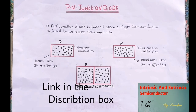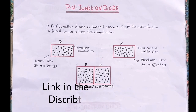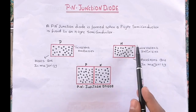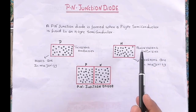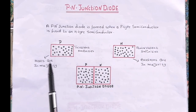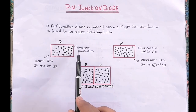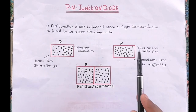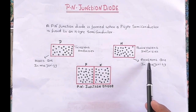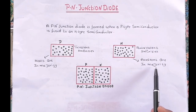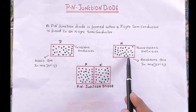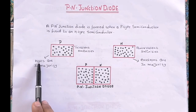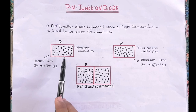The n-type semiconductors are formed by adding pentavalent impurities, whereas p-type semiconductors are formed by adding trivalent impurities to intrinsic semiconductor. In n-type semiconductors, electrons are majority charge carriers and holes are minority charge carriers, whereas in p-type semiconductors, holes are majority charge carriers and electrons are minority charge carriers.